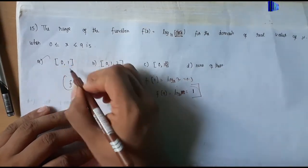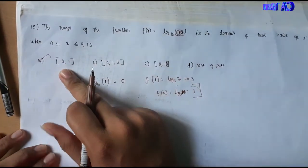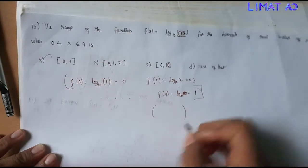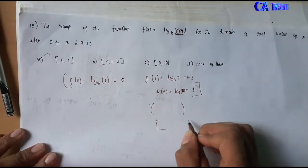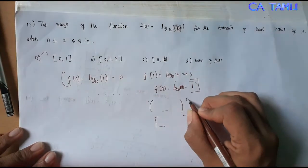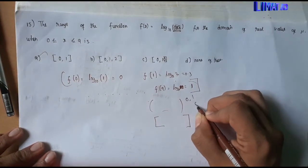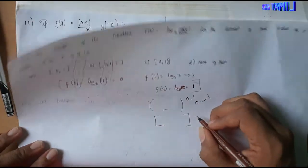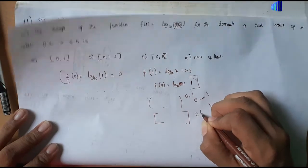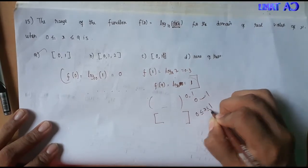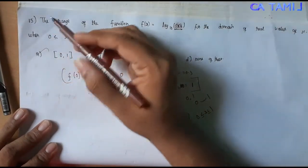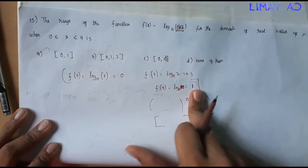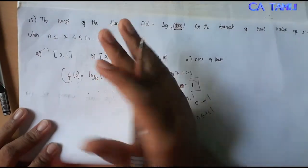So the option is [0, 1] — a closed bracket. The range is 0 to 1. If you want the bracket notation, 0 is equal to x less than or equal to 1, and in between you have all values from 0 to 1. So the answer option is [0, 1].